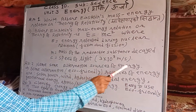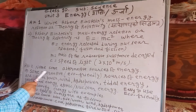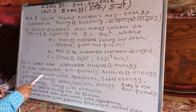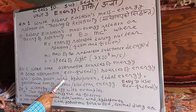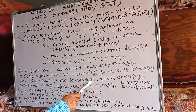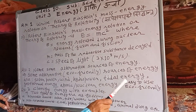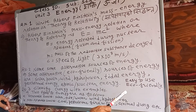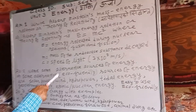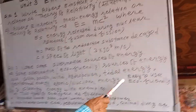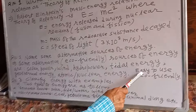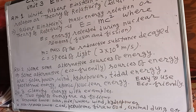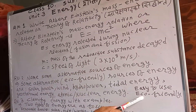Question number one: Name some alternative sources of energy. Some alternative or eco-friendly sources of energy are: solar power or solar energy, wind power, hydropower, tidal energy, geothermal energy, atomic energy or nuclear energy, etc. If you have to write the advantages of alternative sources of energy, you can write: they are easy and quick to use, they are eco-friendly meaning they cause no pollution.